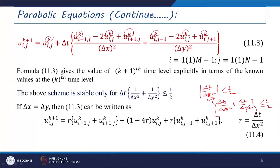For uniform grid spacing (del X = del Y), the explicit formula simplifies to: U_{I,J}^{K+1} = (1 - 4R)·U_{I,J}^K + R·(U_{I-1,J}^K + U_{I+1,J}^K) + R·(U_{I,J-1}^K + U_{I,J+1}^K), where R = del T / del X².